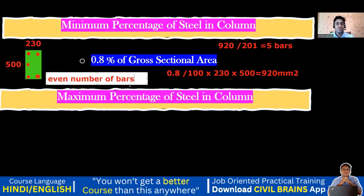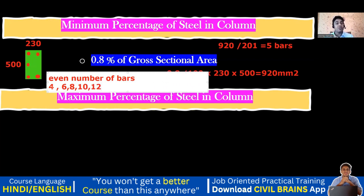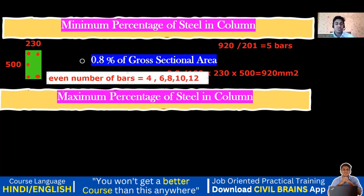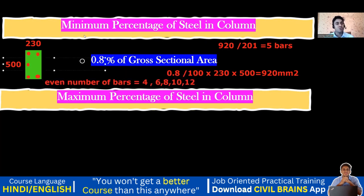The minimum is 4, and even numbers go: 4, 6, 8, 10, 12. We got 5 from the calculation, but since we can't give 5, we must give 6. From a load-carrying standpoint, 5 is sufficient, but from detailing and execution standpoint, 6 bars are required. So we provide 6 number of bars.